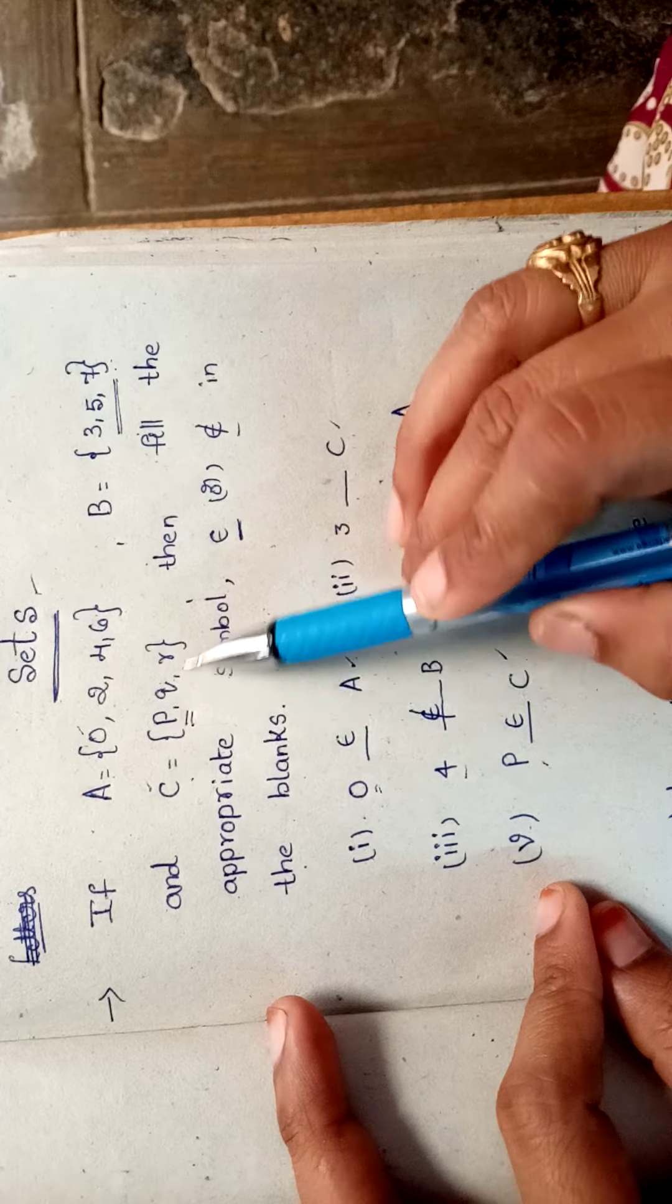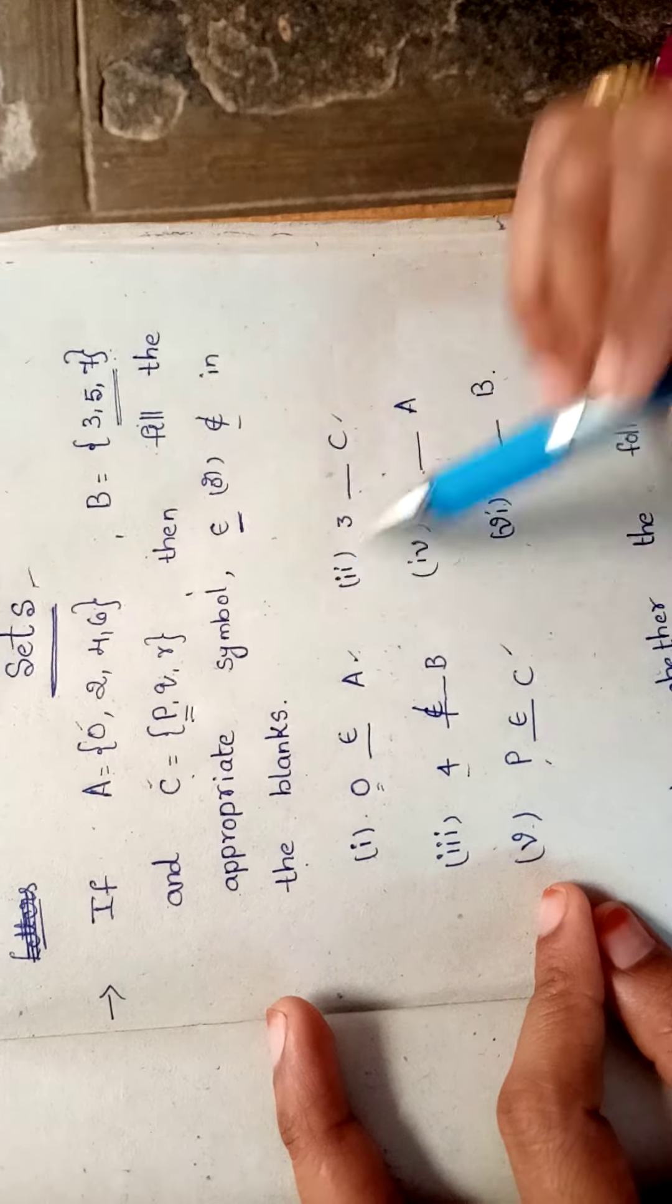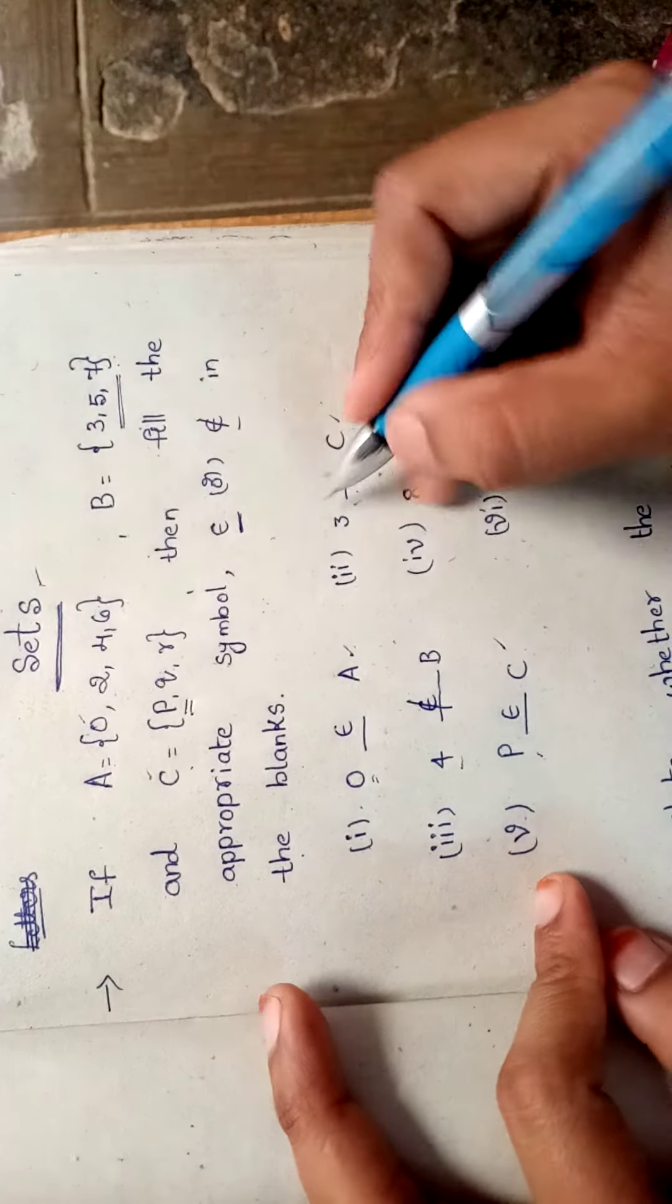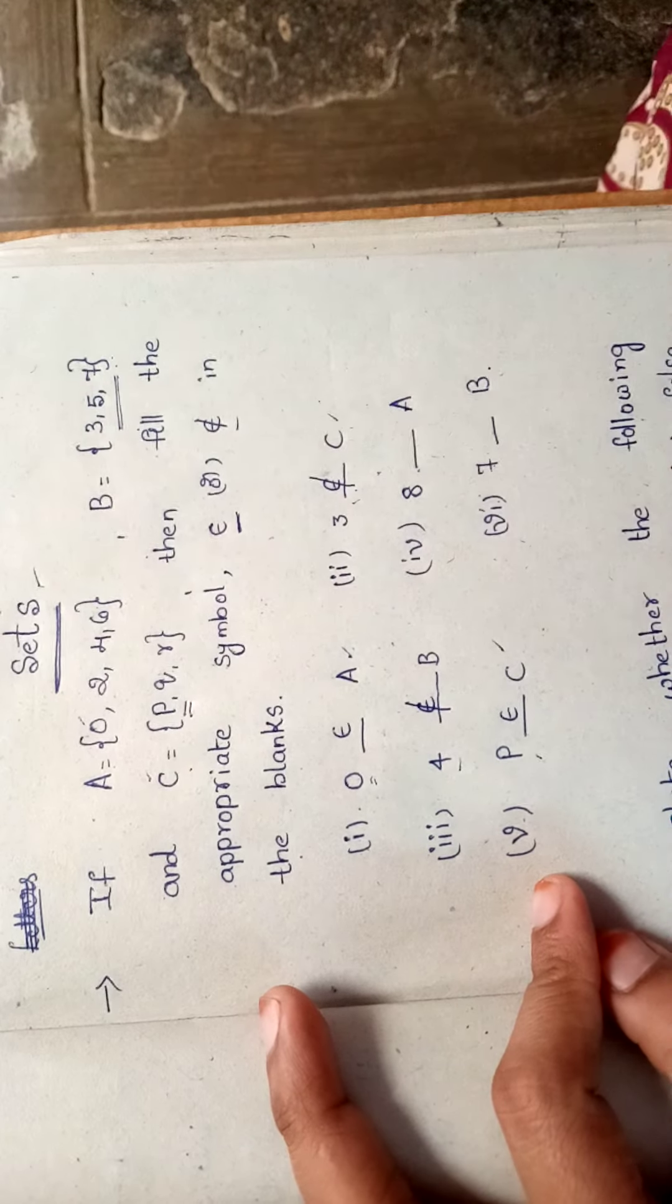There is no element three in the set C. That is 'doesn't belong to C.'